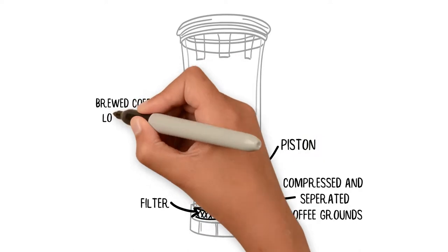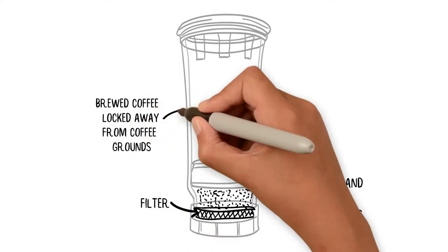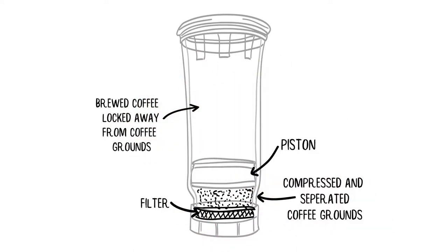The oomph does this by forcing the brewed coffee away from the used grounds and locks it within the upper chamber.